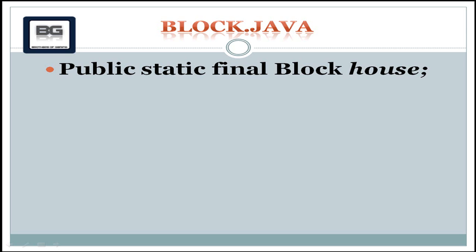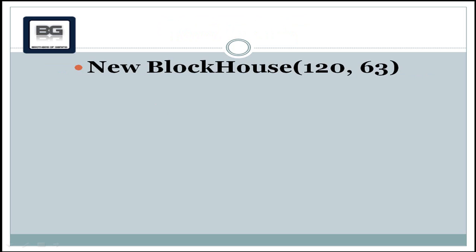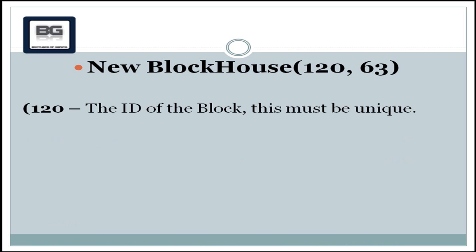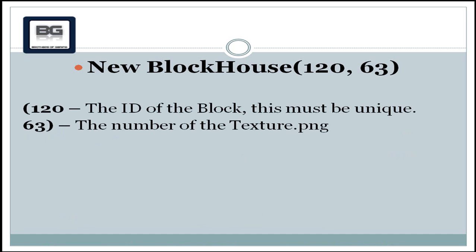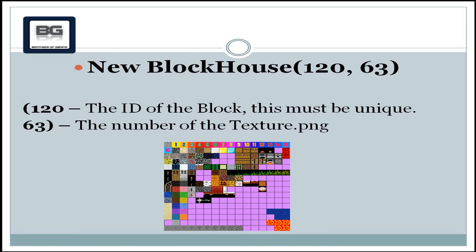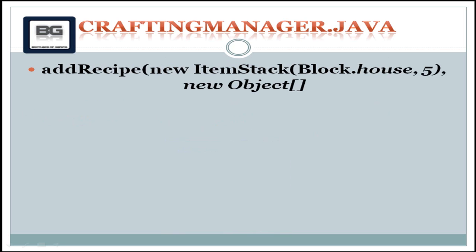The second file we edited was block.java. The first thing we wrote there was `public static final block house` — this is a variable declaration; we declared a variable with the name `house`. The second thing we wrote was `new blockhouse(120, 63)`. The 120 is the ID of the block — this number must be unique, no other block can have it. The 63 is the number you get from the texture.png file, as illustrated in the image on screen.